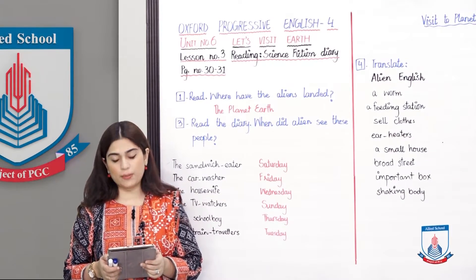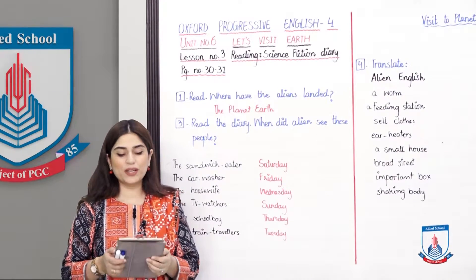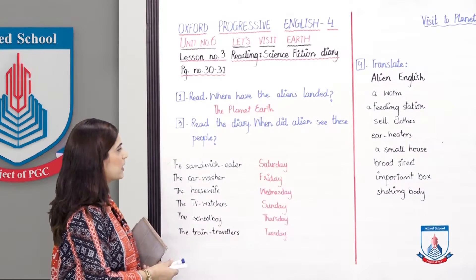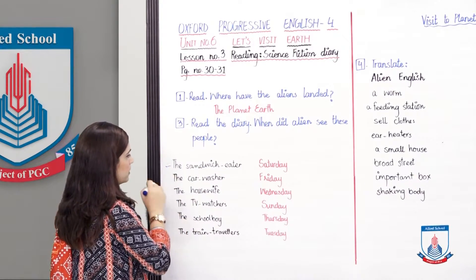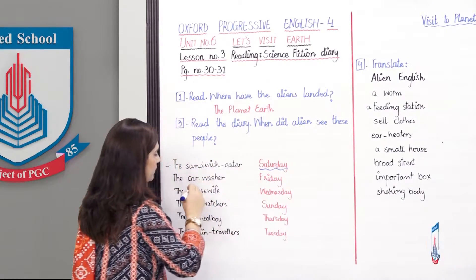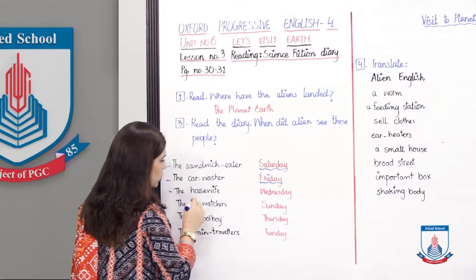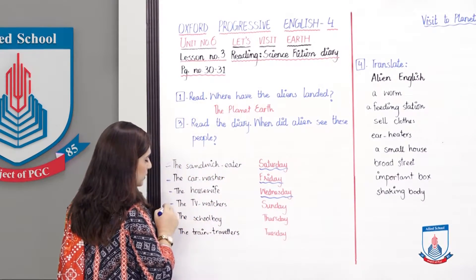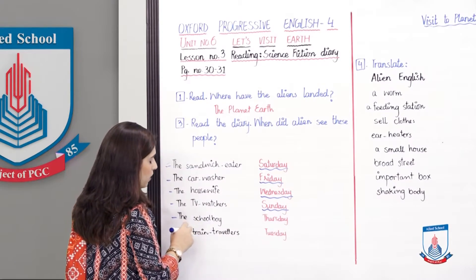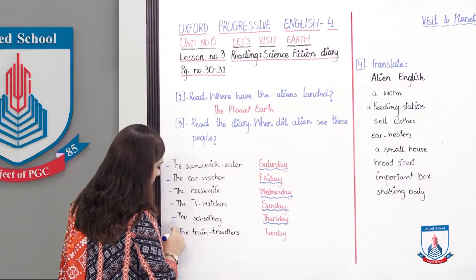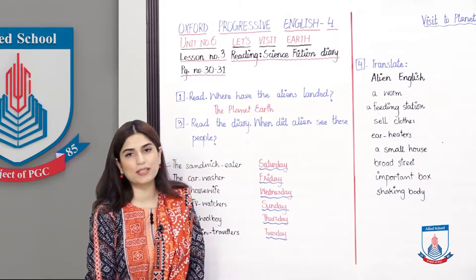I hope you are prepared for this work. Please pause this video. Read the diary — when did the aliens see these people? Number 1: The sandwich eater — Saturday. The car washer — Friday. The housewife — Wednesday. The TV watchers — Sunday. The school boy — Thursday. And the train travelers — Tuesday. You have to fill in all these things in the alien's diary.